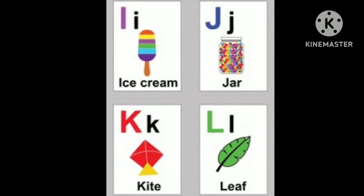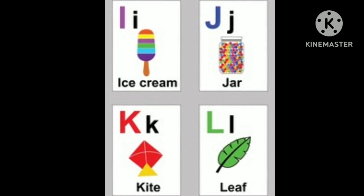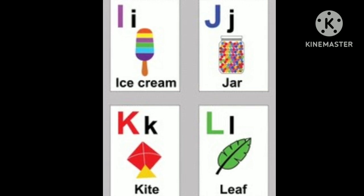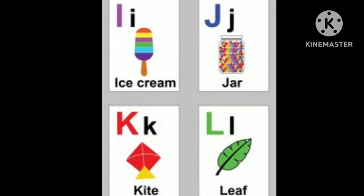J is for jar, K is for kites, L is for leaves,